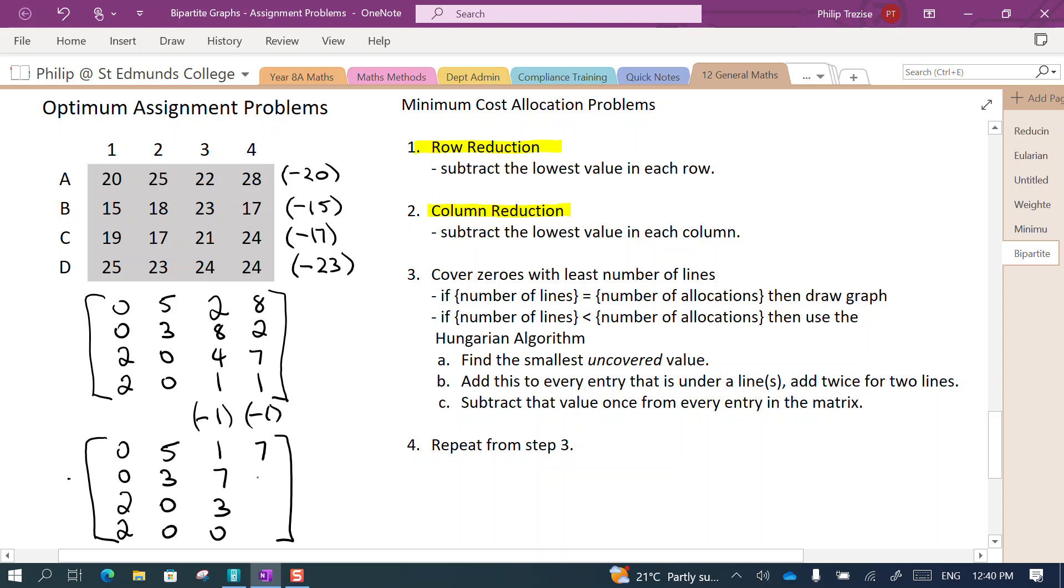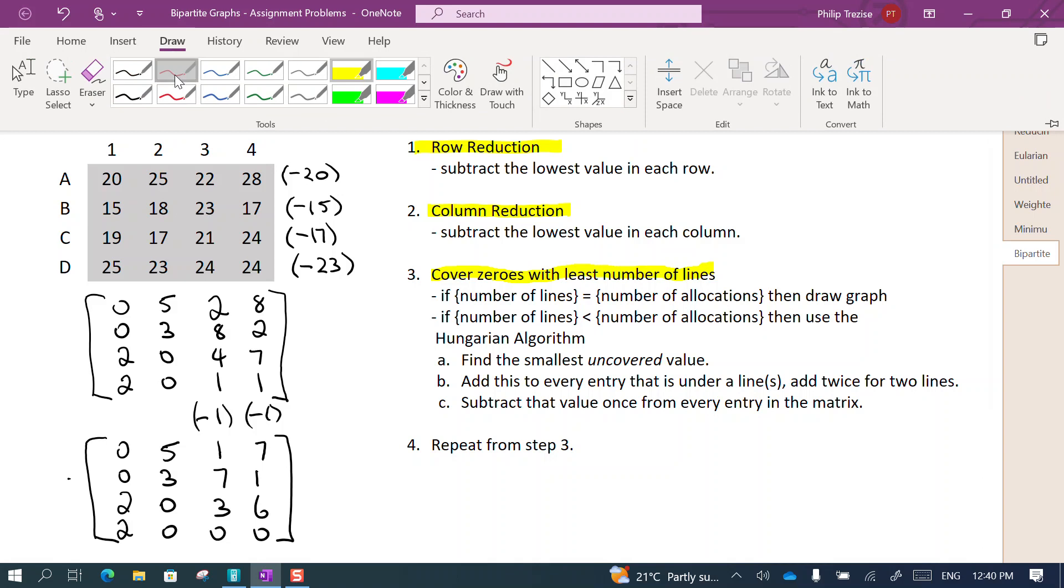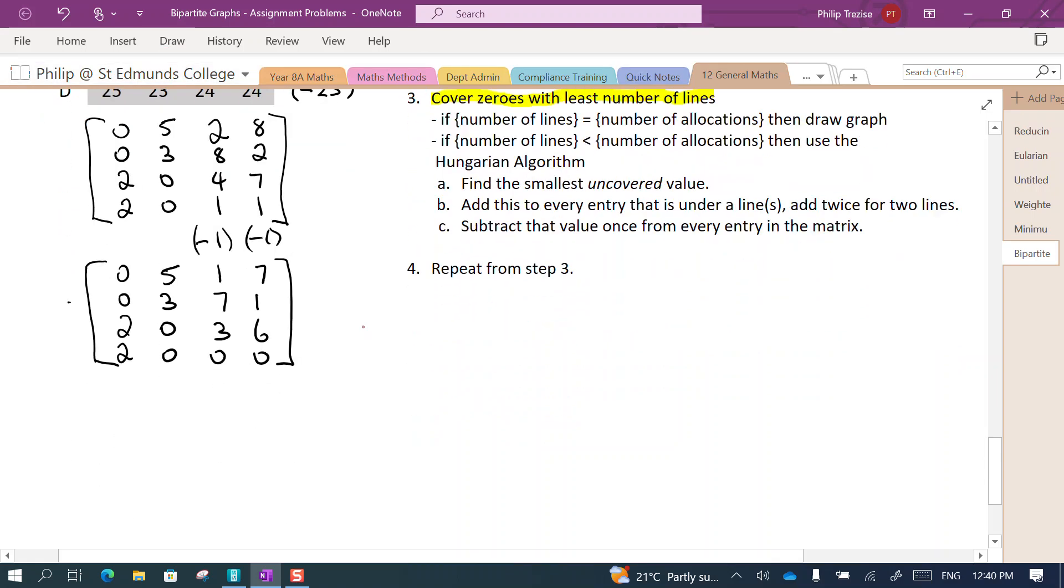Now we get down to the third step. This is where the fun begins. In the third step we cover the zeros with the least number of lines. Now I'm going to be looking here at the matrix, I'm going to be looking for rows or columns that have the highest number of zeros to cover. So the bottom row down here has three zeros, I'll cover them up all in one go. I've got now two zeros in this column so I can get rid of them, and there's still one left. Doesn't really matter if I use a column or a row.